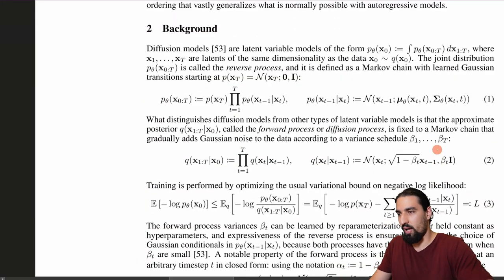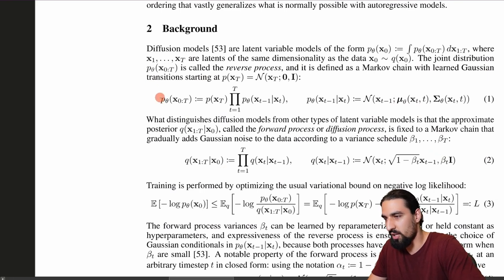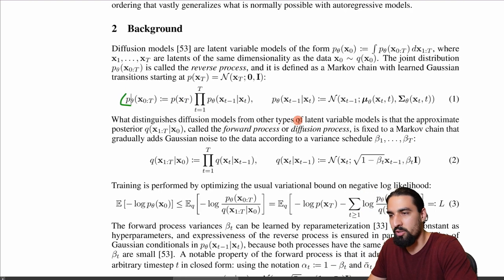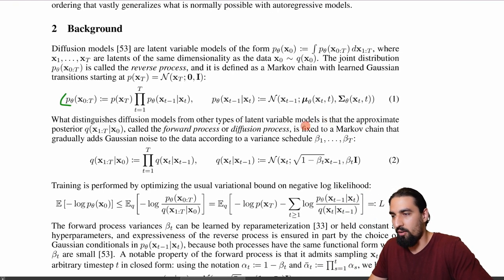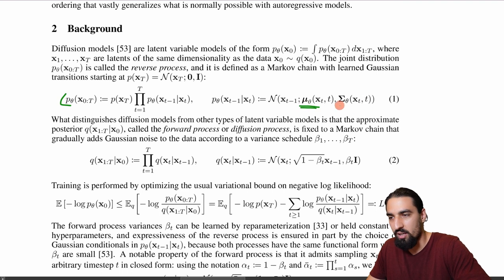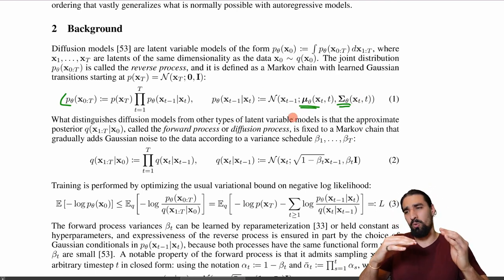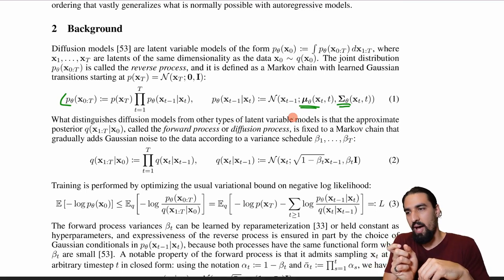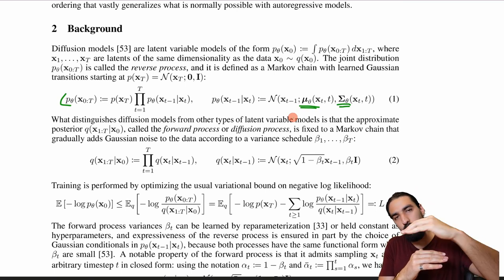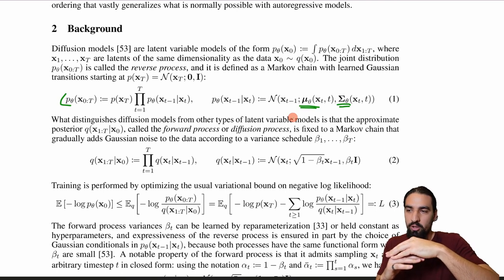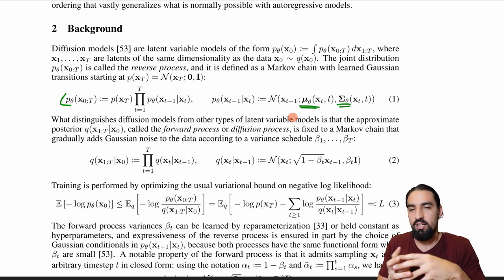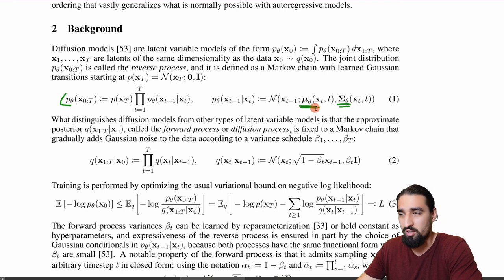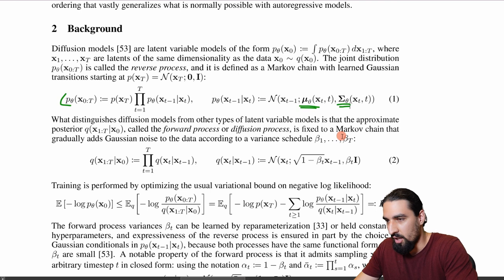Let me now walk you through the formulas. This is how the forward process looks like — this is basically the joint distribution. If we want to do one step of the reverse process, we are going to learn a neural network that predicts the mu theta and the sigma theta, which are the mean and the variance of the Gaussian. They show that if you have steps small enough, you can approximate the reverse process as sampling from a Gaussian. So the idea is to learn those two.